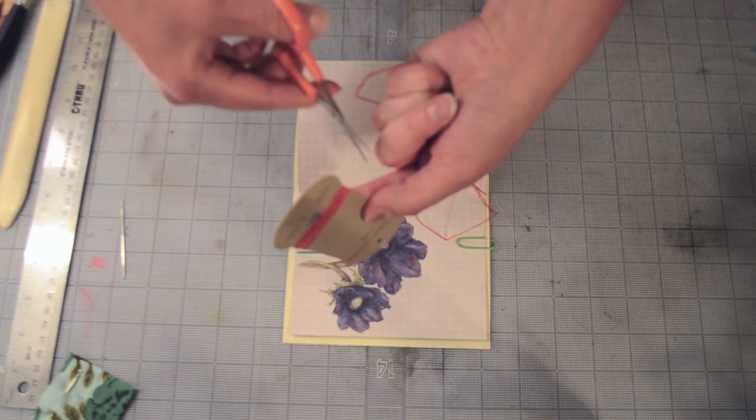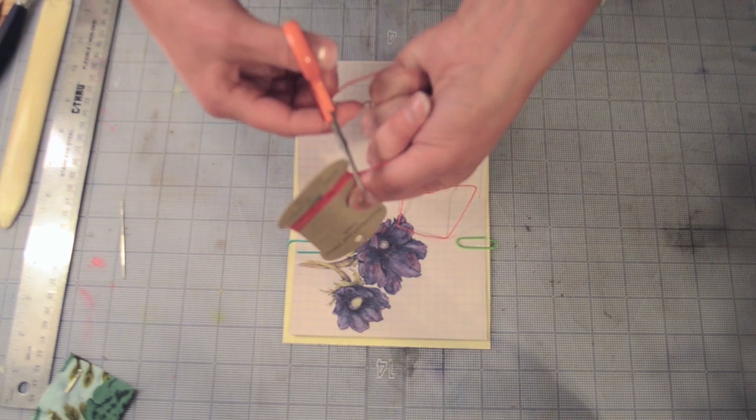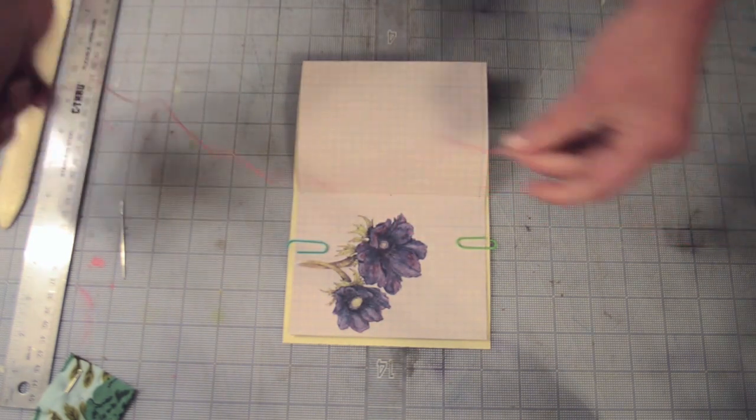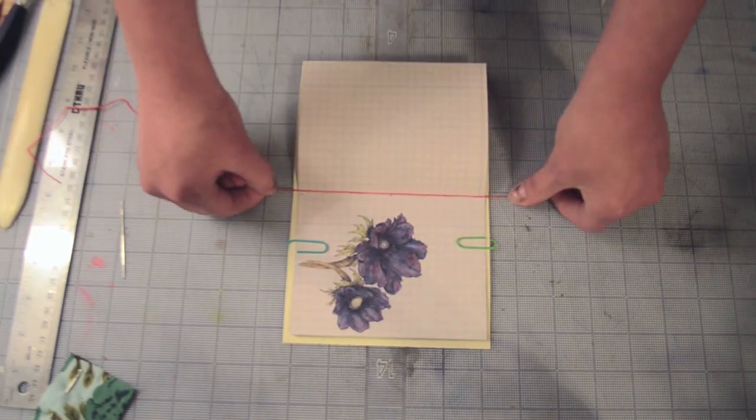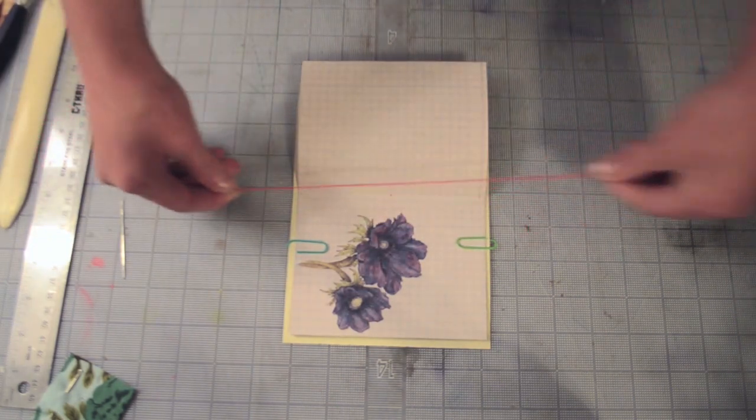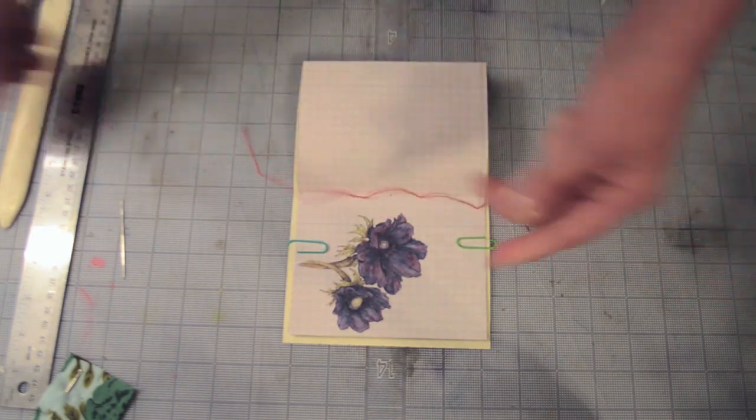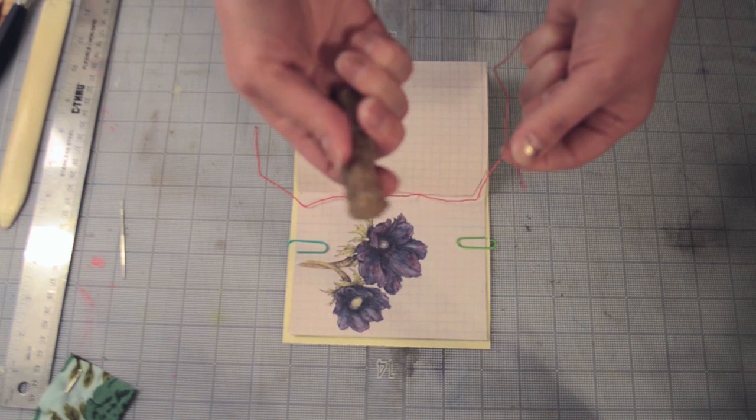I'm going to use this great red thread because you'll be able to really see it. You can see what I'm doing, but I think it's also going to look great with my book. So I've measured about two book lengths, but you need a little extra. Make sure you leave a little extra for tying.